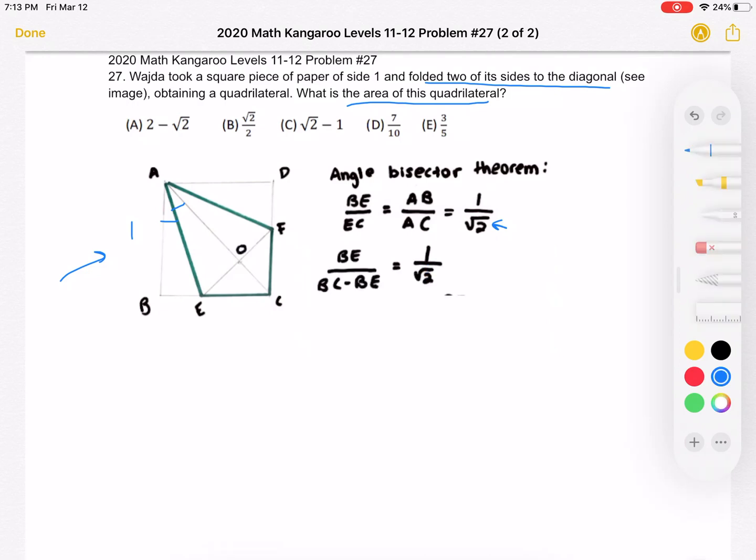Next, we can rewrite EC as BC minus BE, because we want everything in terms of BE. And this is nice because we know what BC is—BC is 1, the entire side length of the square. So now we can cross multiply. We get square root of 2 times BE equals 1 minus BE. We want to put all the BEs on the same side, combine like terms, factor out the BE to get BE times the quantity of square root of 2 plus 1 equals 1. Then we can divide both sides by square root of 2 plus 1 in order to isolate BE.